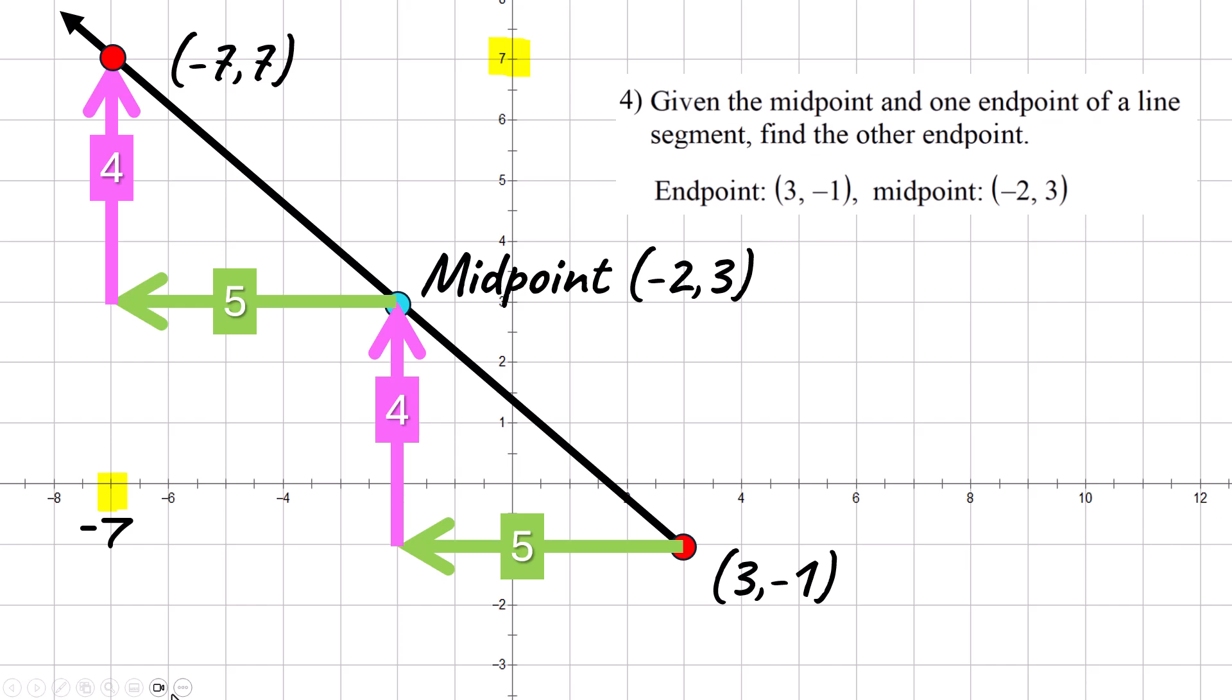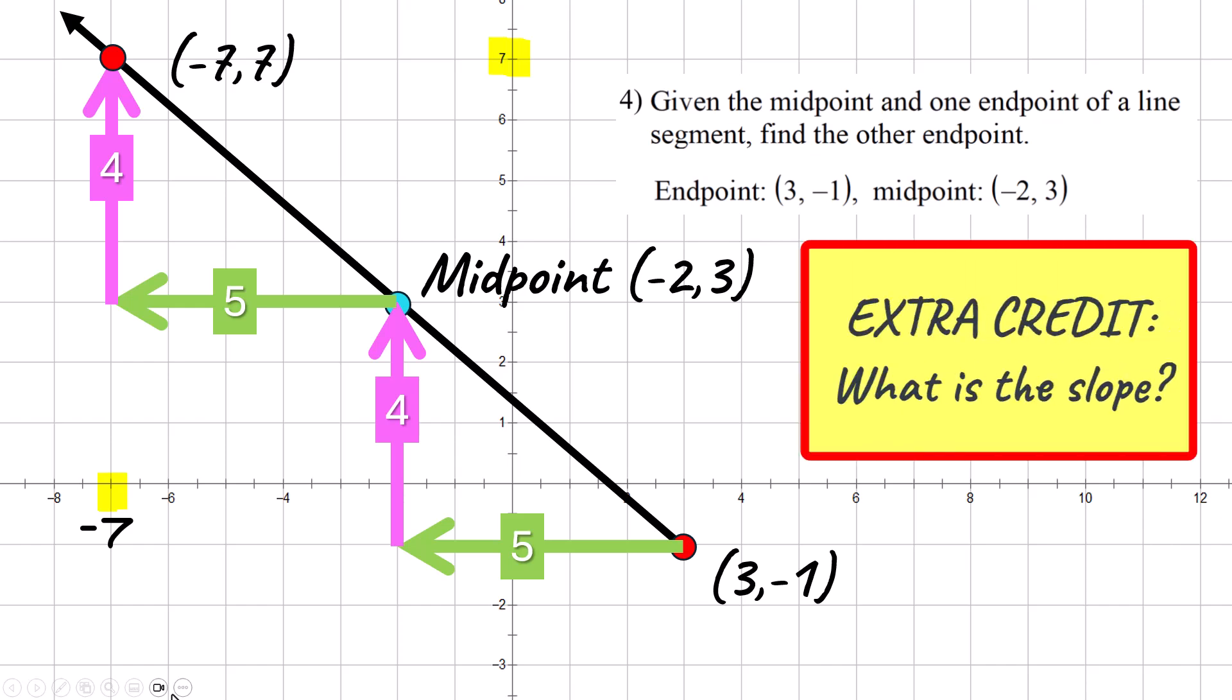Again, do not get what I just did mixed up with slope, but if you understand it, there would be a difference here. Like if you wanted to use this for slope, one of those numbers would be negative, the 4 or the 5. In the comments, tell me if you know that answer.